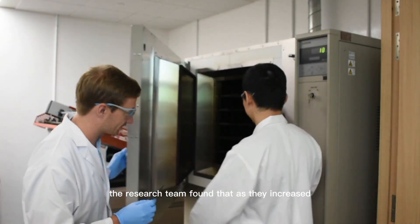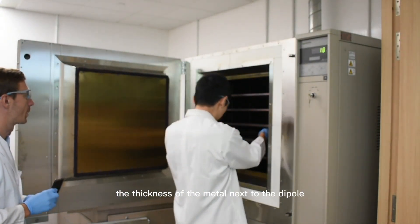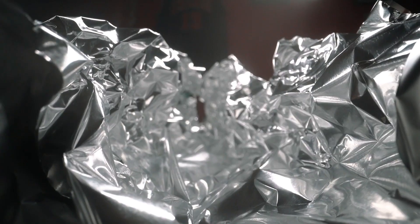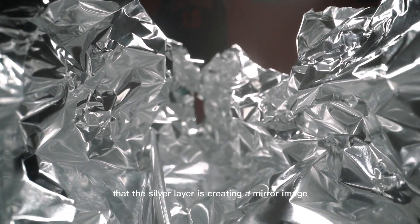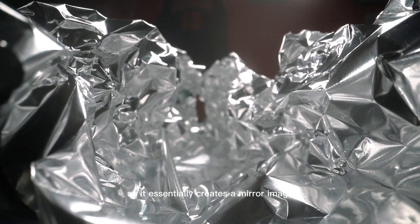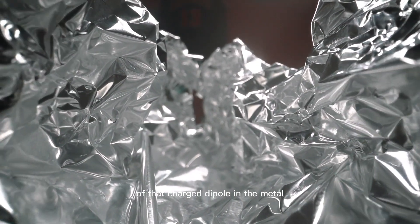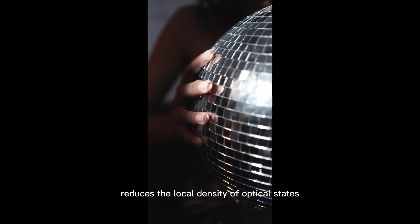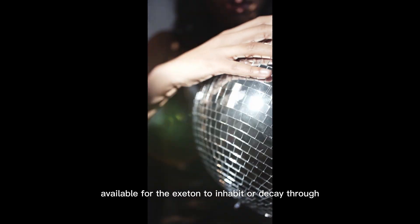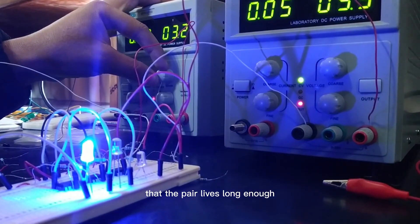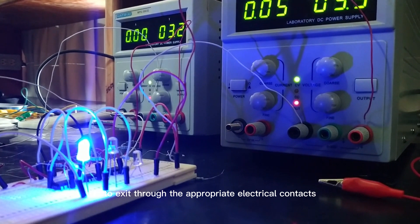But interestingly, the research team found that as they increased the thickness of the metal next to the dipole, this silver layer, this effect started to reverse and the recombination rate actually started to drop. They proposed in their paper that the silver layer is creating a mirror image to the electron hole pair created when the photon strikes the perovskite. This silvery mirror image of the electron hole pair reduces the local density of optical states available for the exciton to inhabit or decay through, which is a fancy way of saying it makes it harder for the exciton to decay or collapse, essentially extending the likelihood that the pair lives long enough to exit through the appropriate electrical contacts and become electricity.